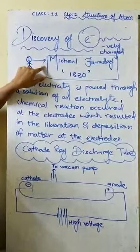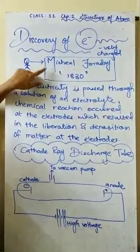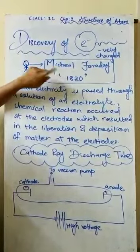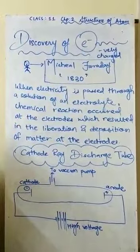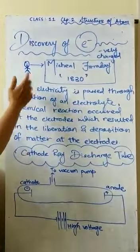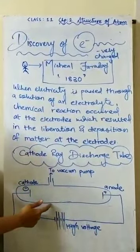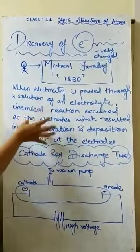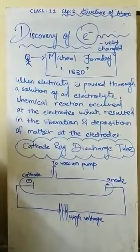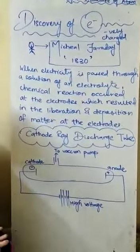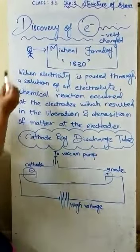The person who found out that the electron is present was Michael Faraday in 1830. The experiment Michael Faraday did was with the cathode ray discharge tube. These are laws of physics we will also learn in electrochemistry in class 12.